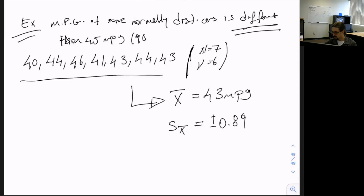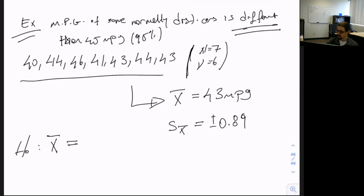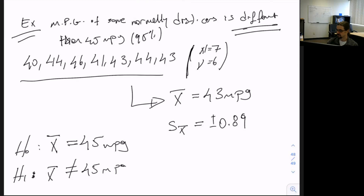The question is at 95 percentile. We set H0: x-bar is equal to 45 miles per gallon, and the alternative hypothesis H1: x-bar is not equal to 45 miles per gallon.